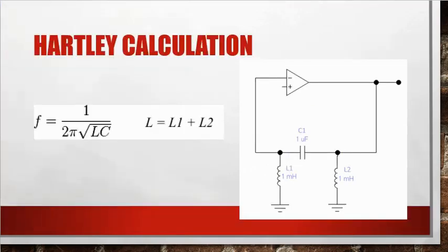Hartley calculation is that the frequency of resonance is equal to 1 over 2 pi square root of L times C. Now the L that we use here is L1 plus L2, so we add the two inductors together for this L calculation here.